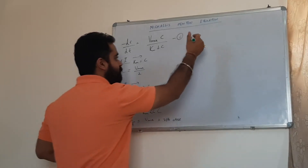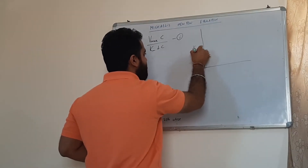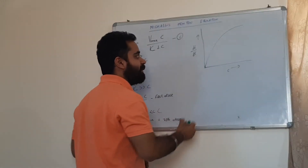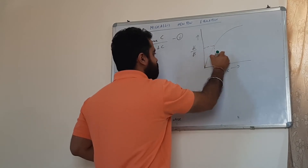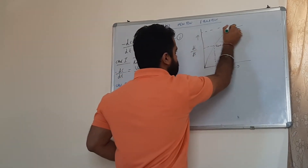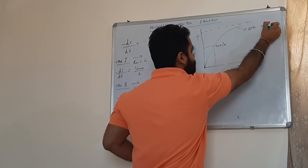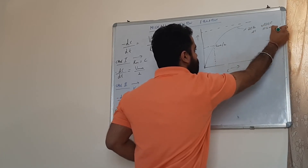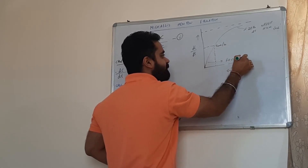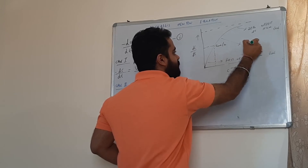Depicting this graphically, we plot dC/dt versus c. Vmax is shown at the top, and Vmax/2 is marked at an intermediate point. The graph shows zero-order kinetics at high concentrations, first-order kinetics at low concentrations, and mixed-order kinetics in the intermediate region.